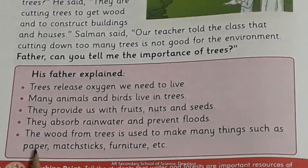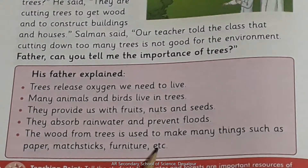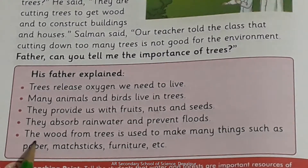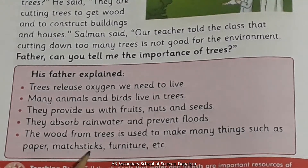The wood from trees is used to make many things such as paper, mat sticks, furniture, etc. — درختوں سے حاصل کی جانے والی لکڑی بہت سی چیزیں بنانے کے لیے استعمال ہوتی ہے جیسے کہ paper، mat sticks، furniture وغیرہ۔ Mat sticks: لکڑی سے بنی ہوئی sticks جو آگ جلانے کے لیے استعمال ہوتی ہیں۔